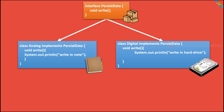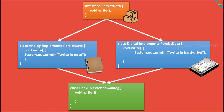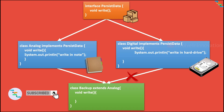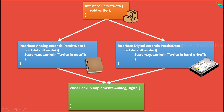Now we have two different classes implementing the same PersistData interface. When we try to create a Backup class that extends Analog, there is no problem — that is basic single inheritance. But if we try to extend one more class, Digital, that is where the problem is — multiple inheritance is not acceptable in Java.